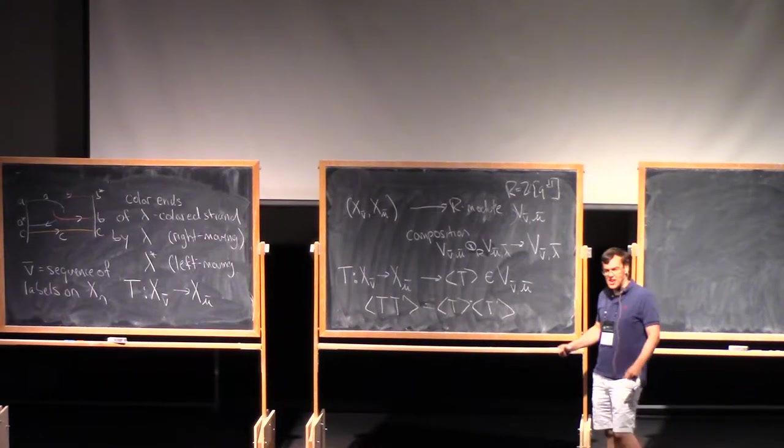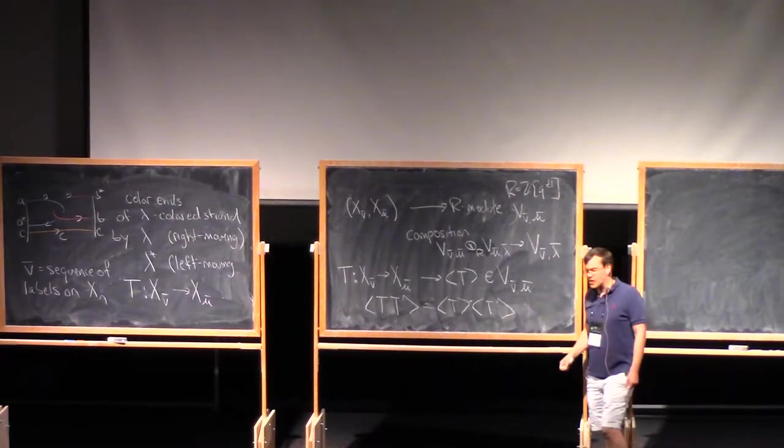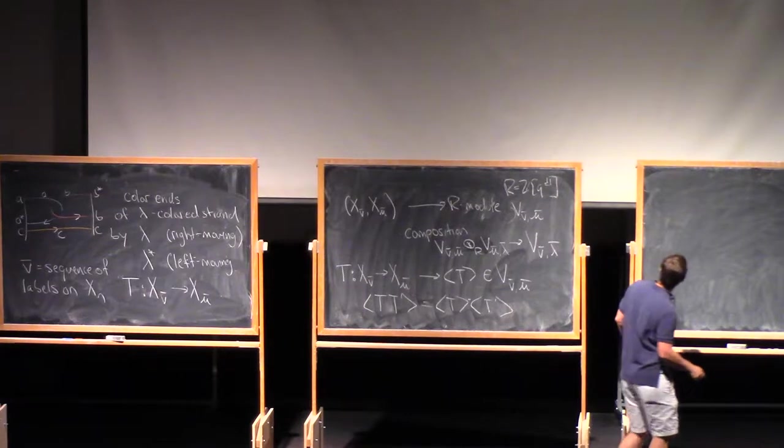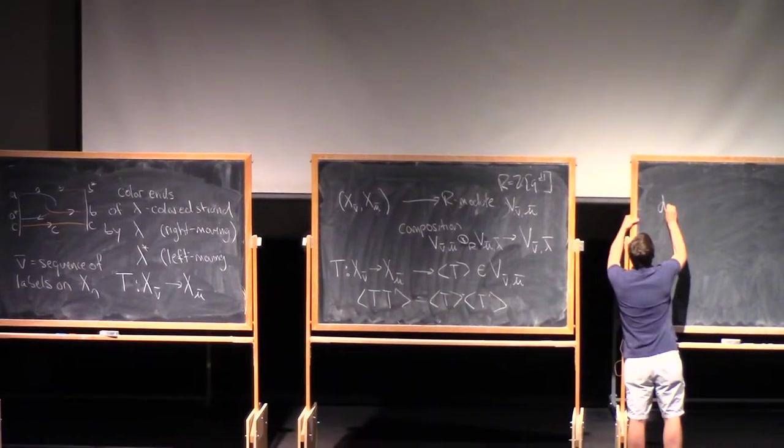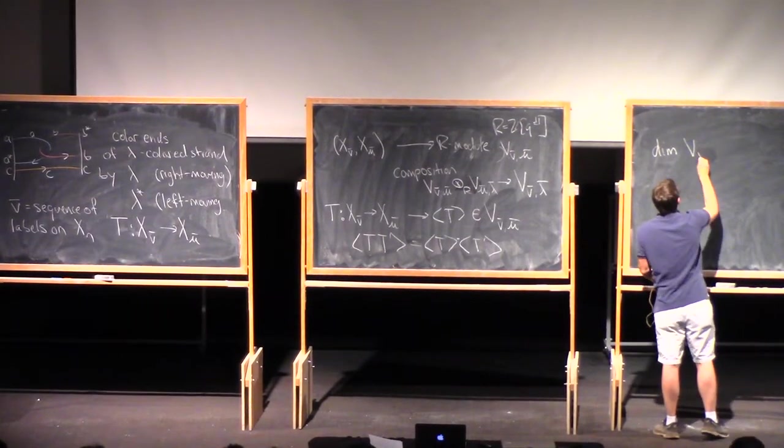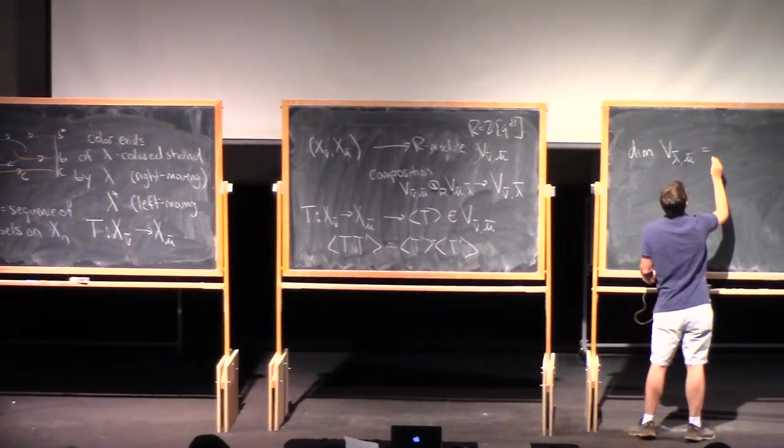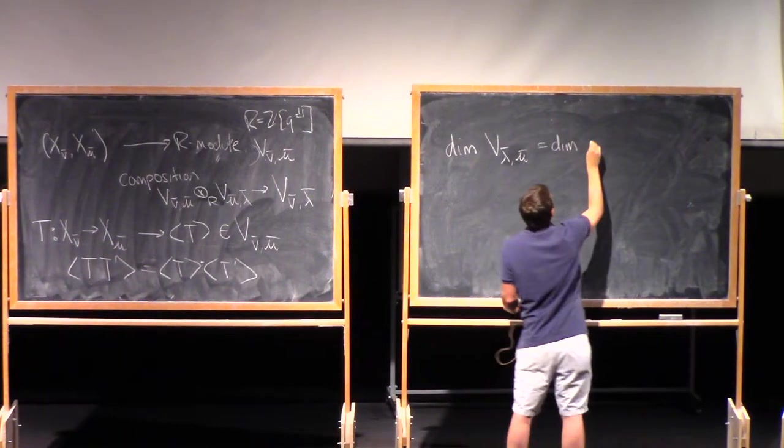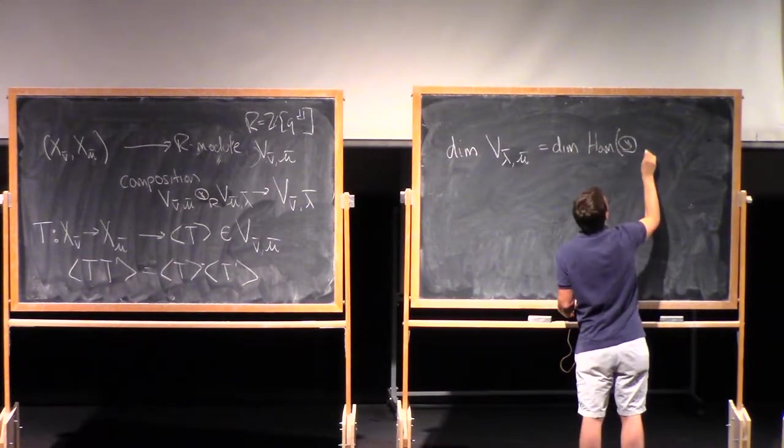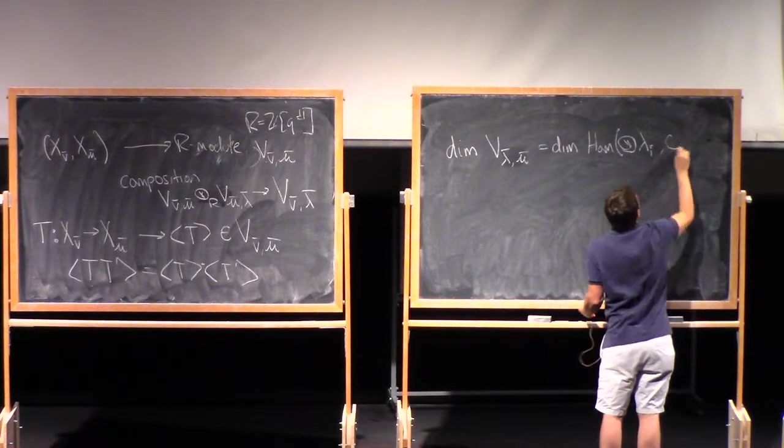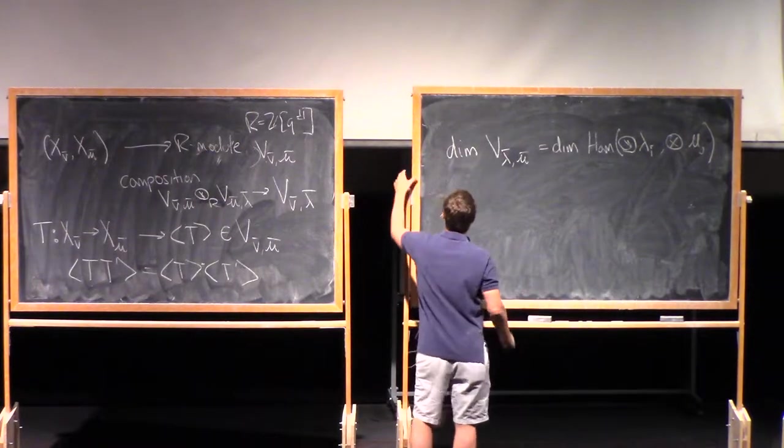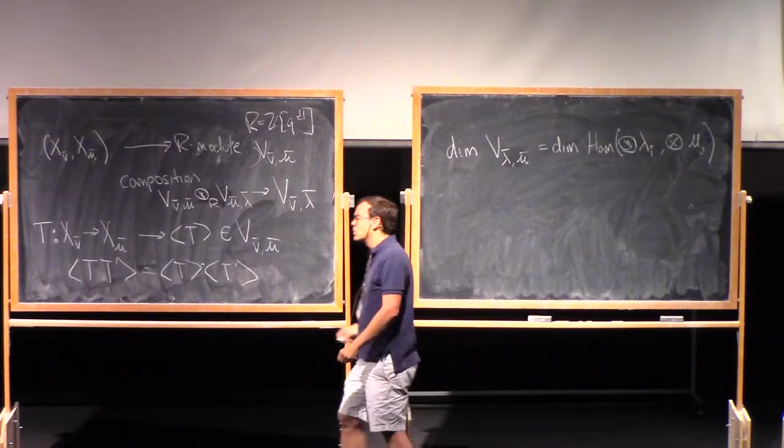So this is sort of the general setup for quantum invariants of knots and tangles. You know, the question you have to ask yourself is what are these vector spaces and how do I evaluate this bracket? And I won't give you a general answer to that question, but let me just remark that the dimension of v lambda bar mu bar is the same as the dimension of the space of homomorphisms between the tensor product of all the lambdas to the tensor product of all the mu's.